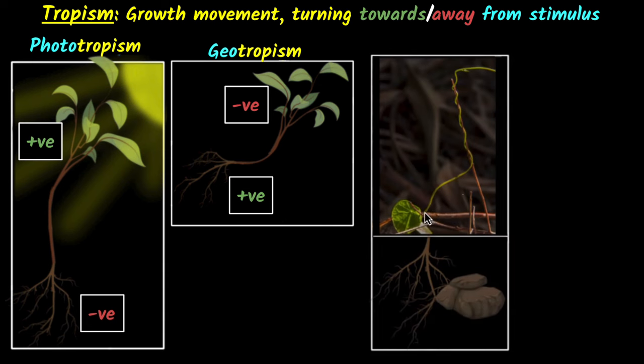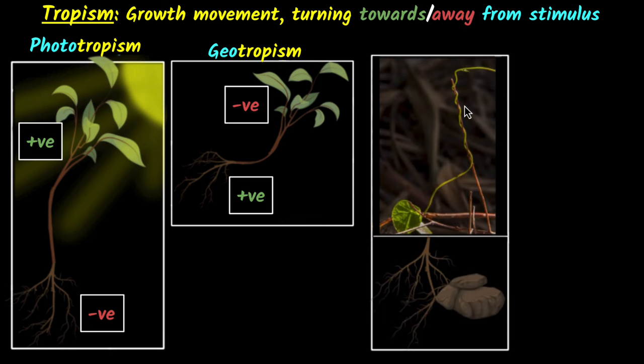All right, let's take another example. Consider a creeper that is turning along and growing. This is also tropism. This is called thigmotropism because the plant is turning based on touch. So the moment it touches something, it turns and coils along it, making it creep and grow.